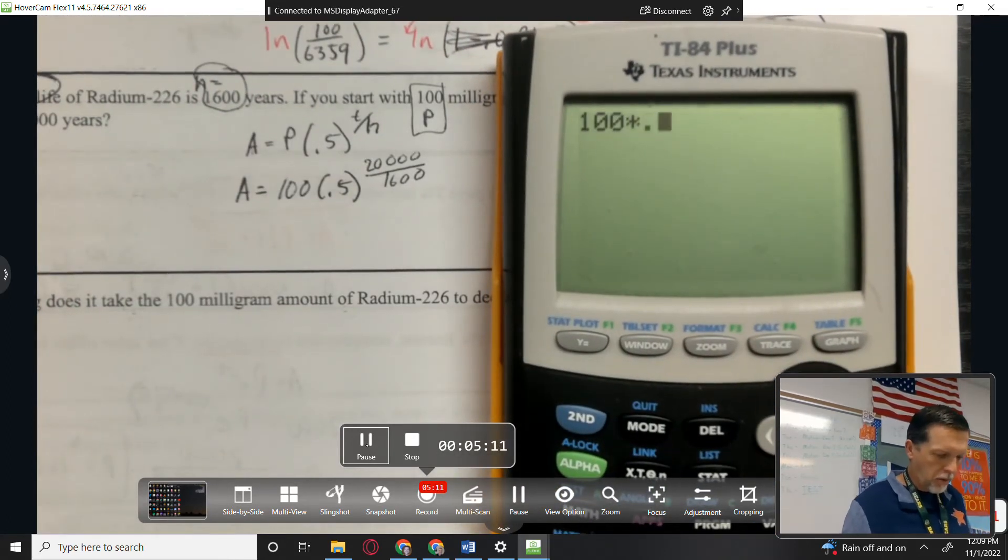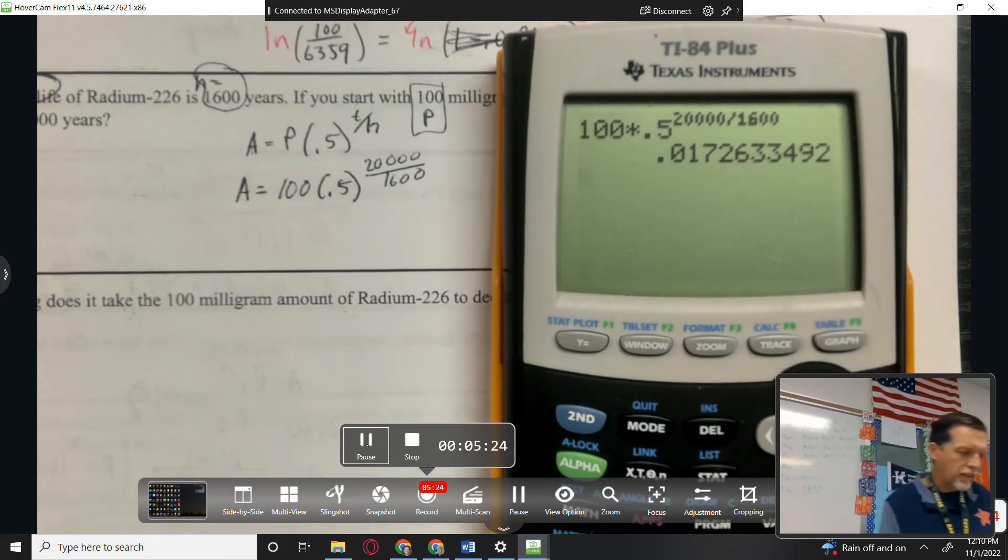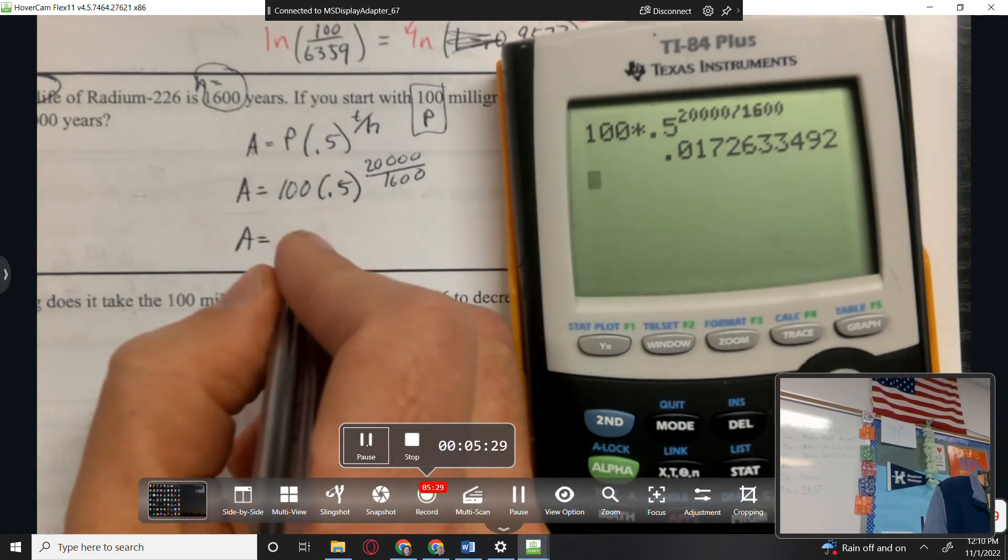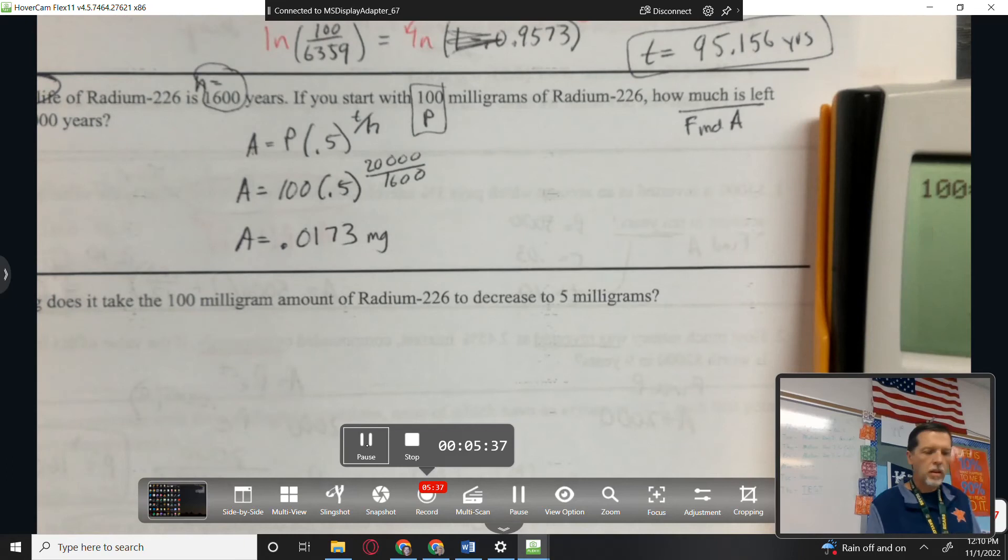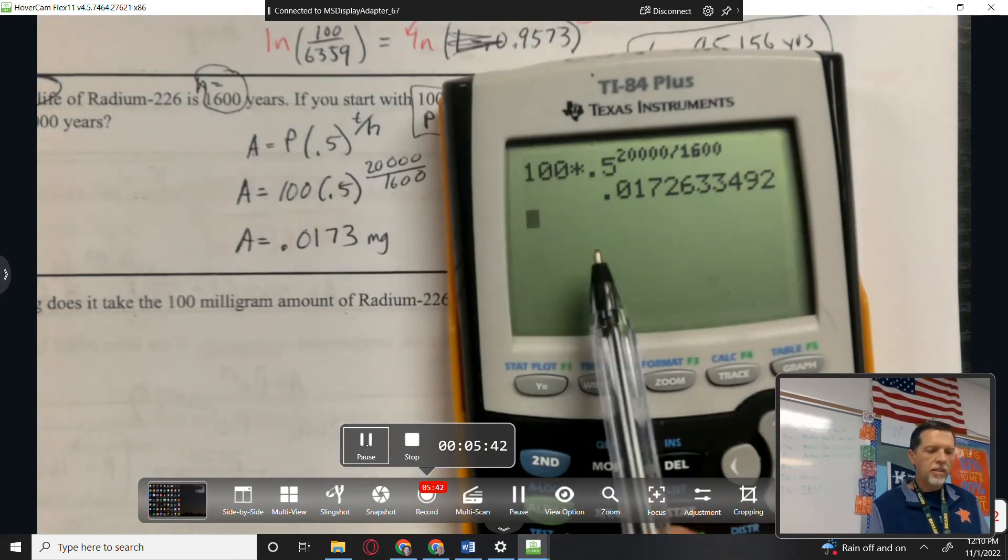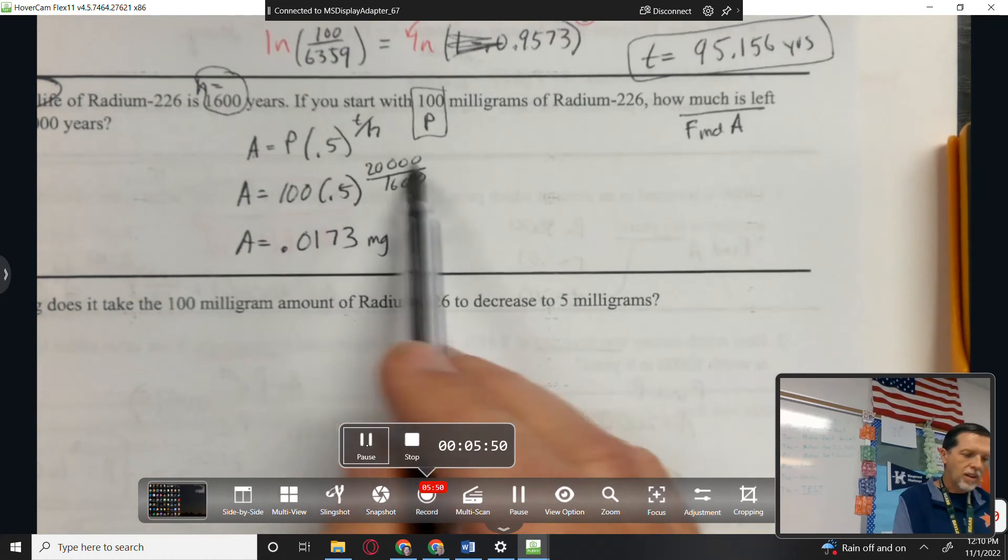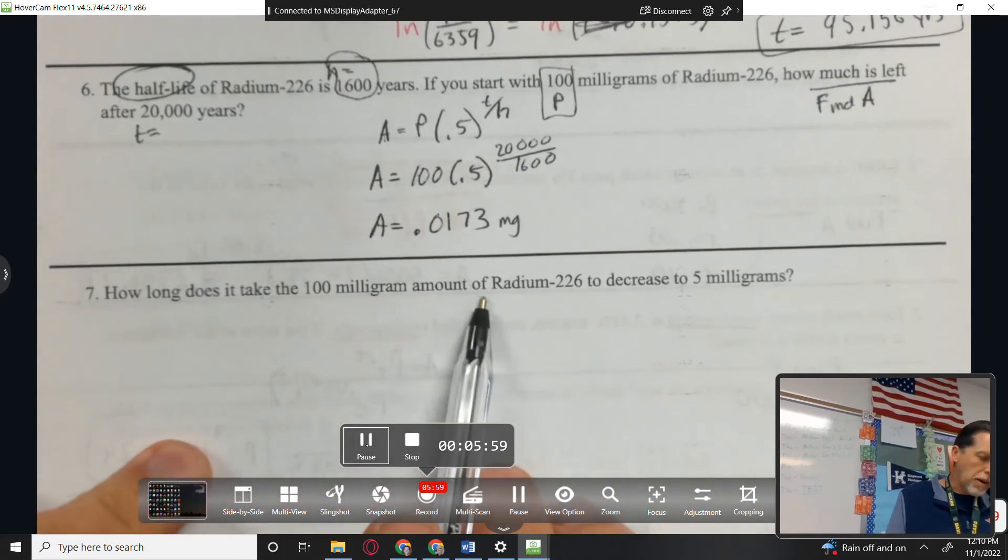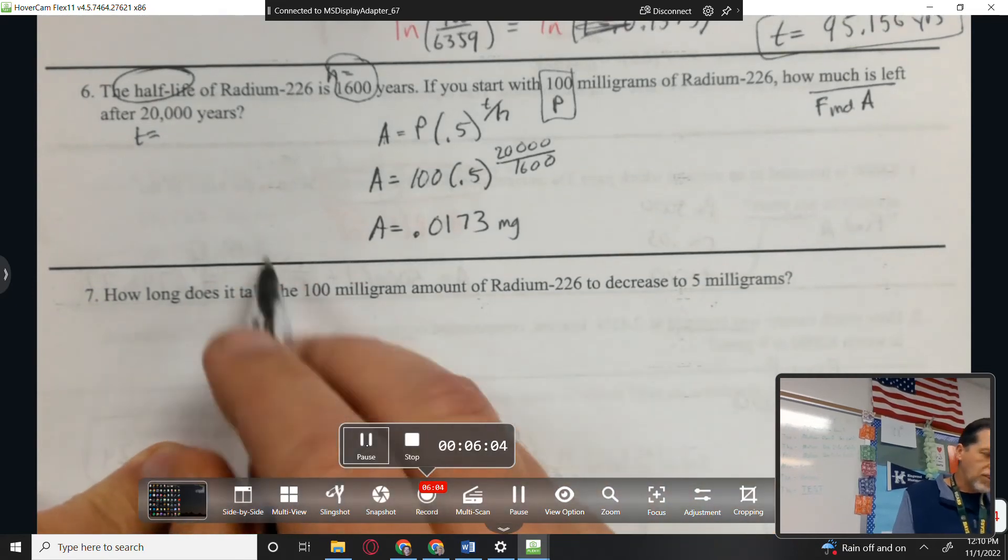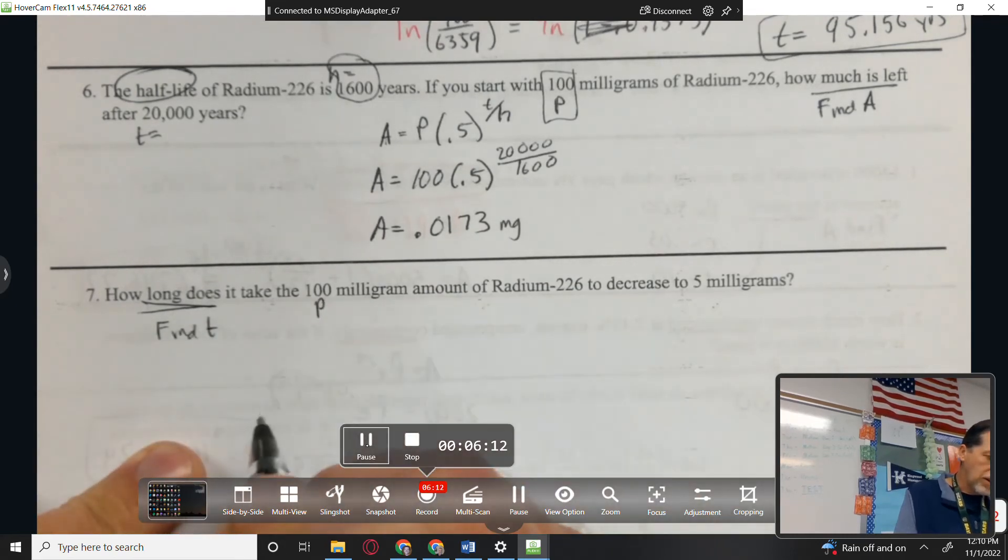So 100 times 0.5 to the 20,000 divided by 1600. I know the calculator knows the order of operations, so I didn't have to worry about parentheses there. The big thing is, don't multiply 100 and 0.5 and tell me that that's 50 and then raise that to something, because you've got to do the exponent before you do the multiplication. Your calculator knows that. I just hope you know that. Number seven. How long does it take the 100 milligram amount to decrease to 5 milligrams?